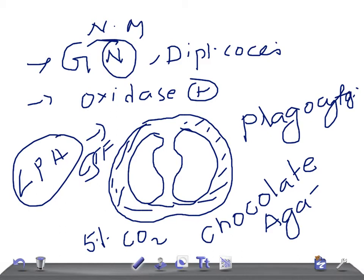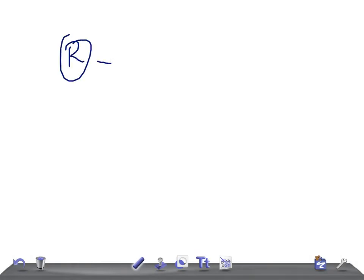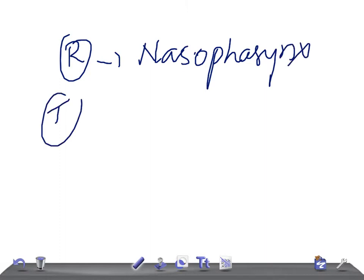The other important reaction is it ferments maltose, whereas Neisseria gonorrhoeae does not ferment maltose. Neisseria meningitidis ferments maltose. What's the reservoir for this? Human nasopharynx.